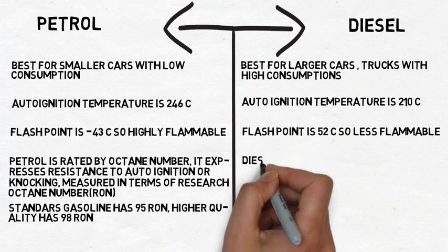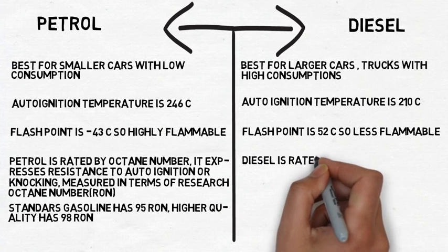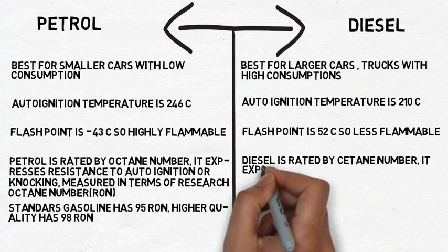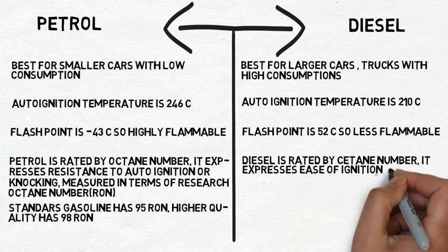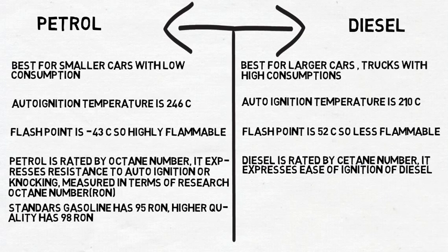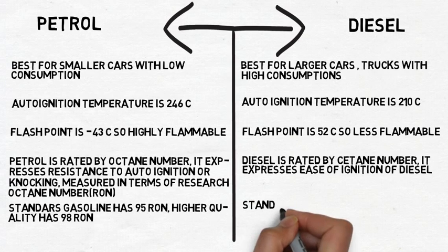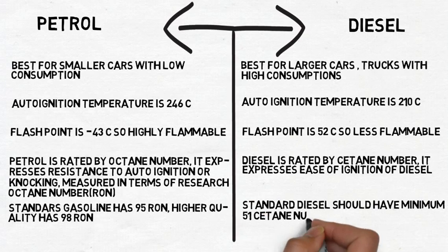Diesel is rated by cetane number, which is the opposite of octane number. While octane number represents resistance to auto ignition, cetane number represents the ease of ignition of diesel. For normal performance of a diesel engine, standard diesel should have a minimum cetane number of 51.